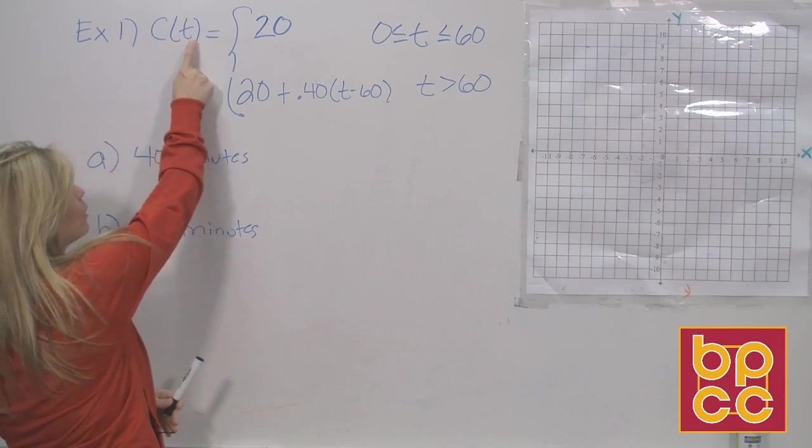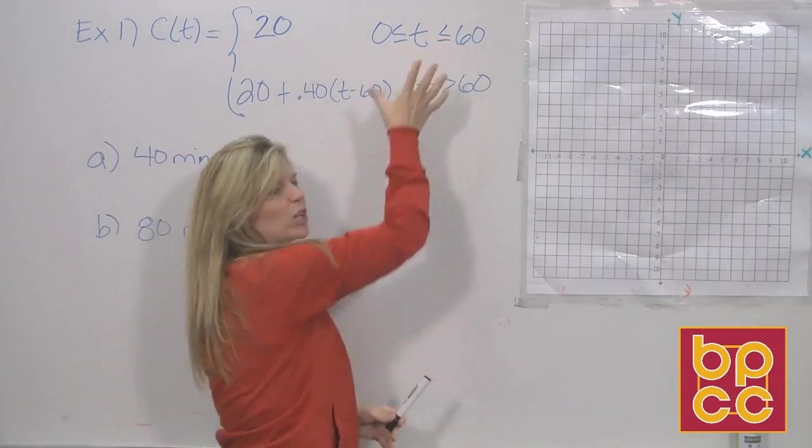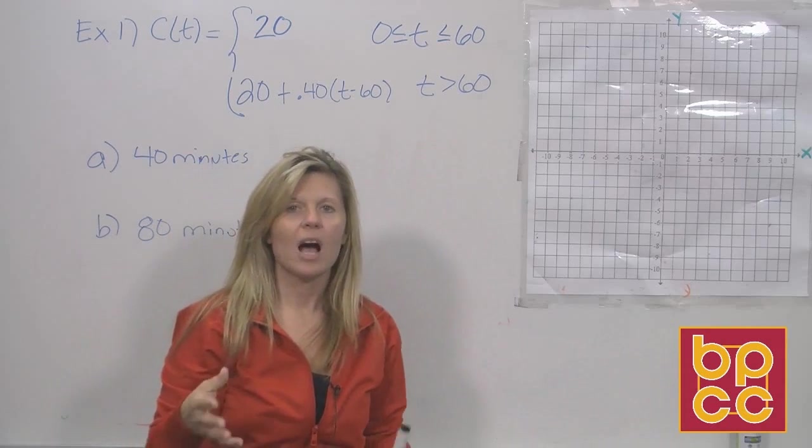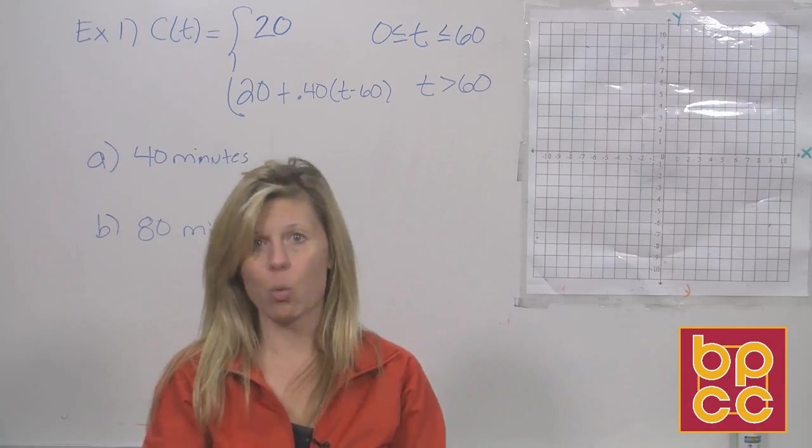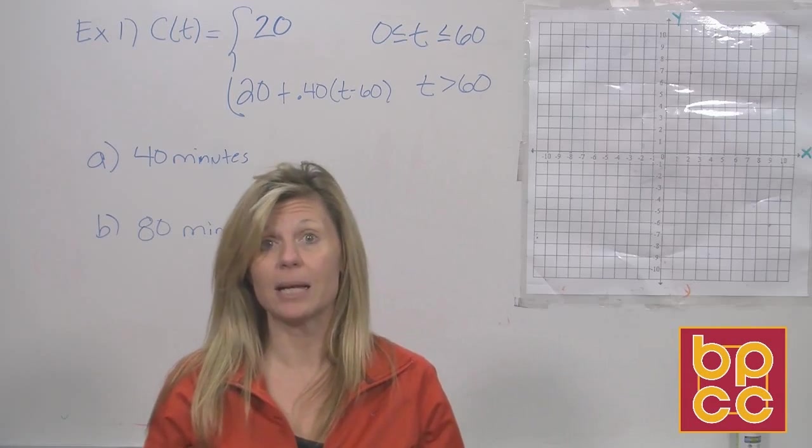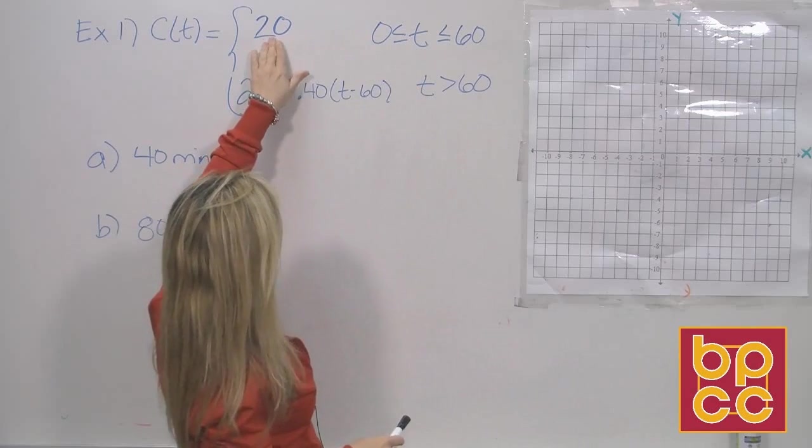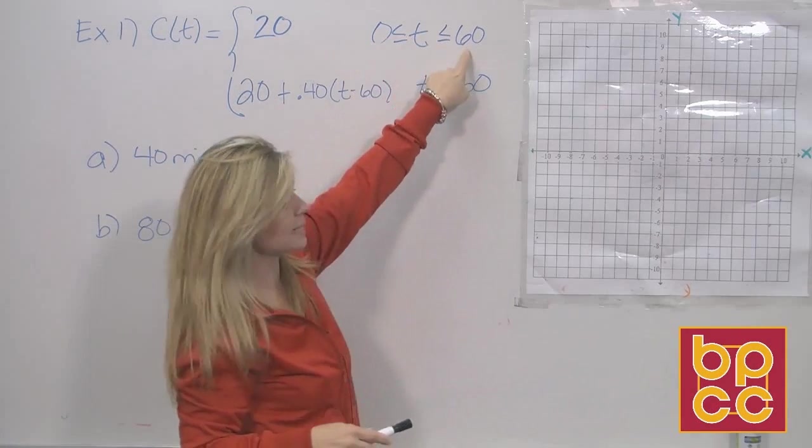Well, the cost for you talking would equal $20. And then there's here this restriction or condition. Well, this is important. I just said, according to the company, we're going to pay $20 if we can talk for about 60 minutes. And that's what this is saying here. I'm going to pay $20 if I talk between 0 and 60 minutes.